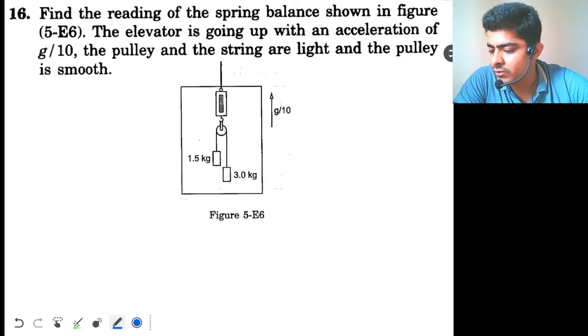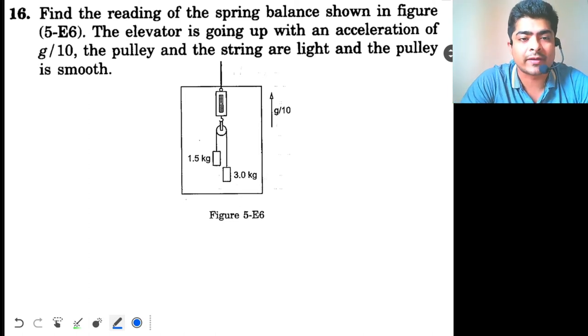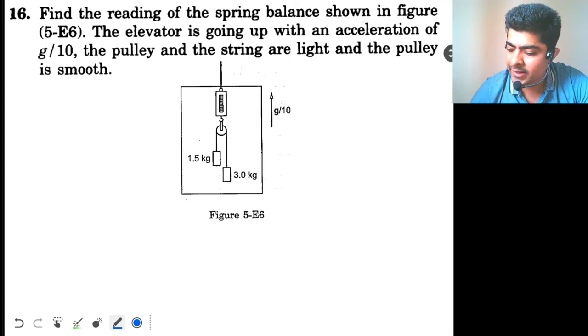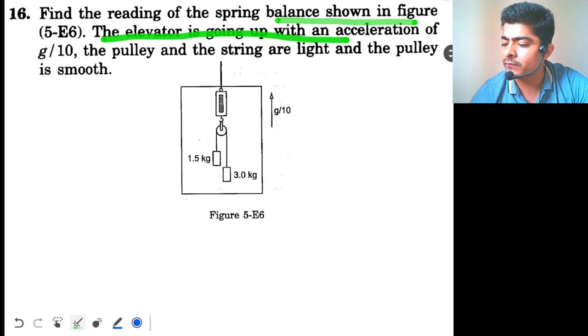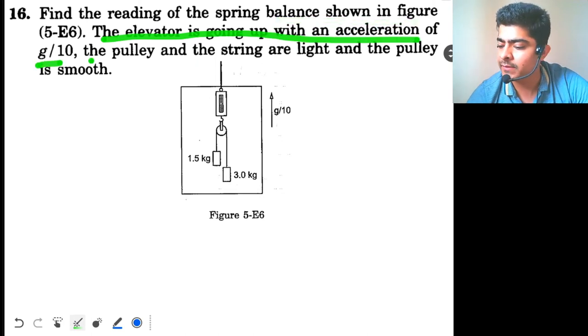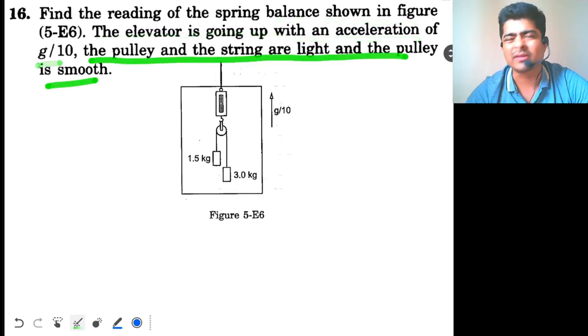Okay, now see this question. This is question number 16 from chapter number 5 of HC Verma. Find the reading of the spring balance shown in figure. The elevator is going up with acceleration of g by 10. And the pulley and the string are light and the pulley is smooth. Very easy question.